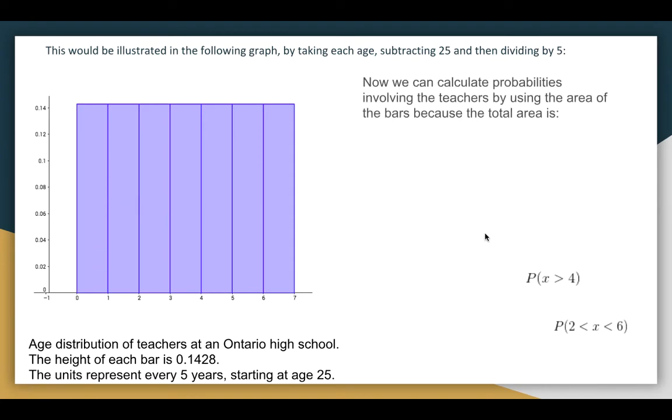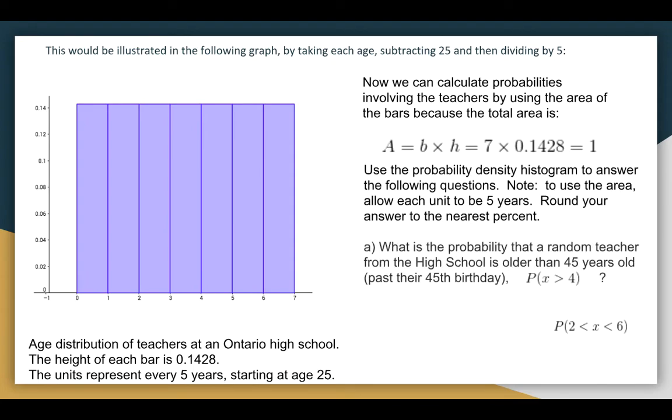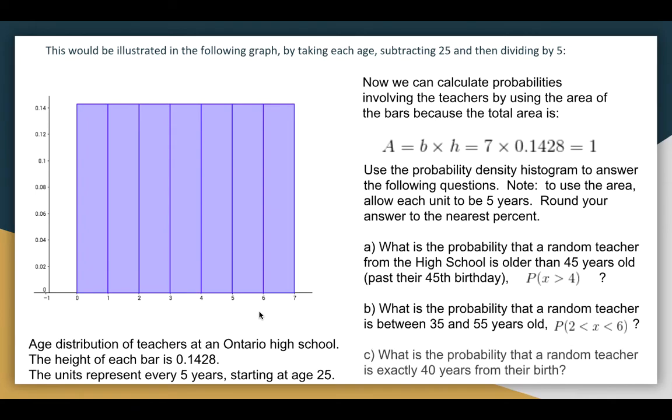Now the height of each bar is 0.1428, so we're going to answer some questions. And so notice that the probability is now 1. What's the probability that a random teacher from a high school is older than 45 years old? So 45, we know it's 25, 30, 35, 40, 45. So older than 45 is going to be the 4 or 4 bigger, and it's going to be 3 bars out of 7. So 3 out of 7. Or 3 times 0.1428. Between 35 and 55 is the numbers between 2 and 6. Because remember, this is 25, 30, 35, and it goes to 60. So between 2 and 6, we got 1, 2, 3, 4 bars, and a total height of 0.1428. So we can do 4 over 7, or 4 times 0.1428. And exactly 40 years old, so 25, 30, 35, 40. So at 3, there's no area at 3, so it's 0%.